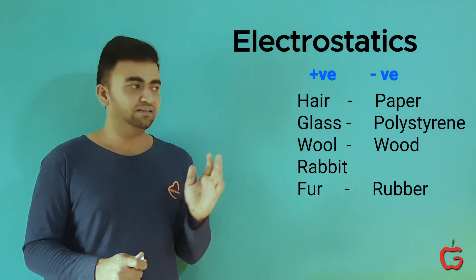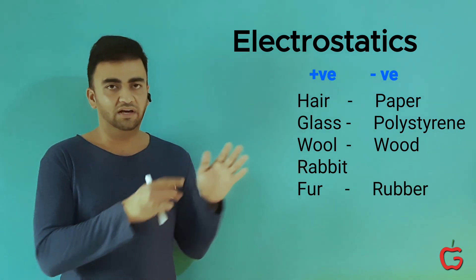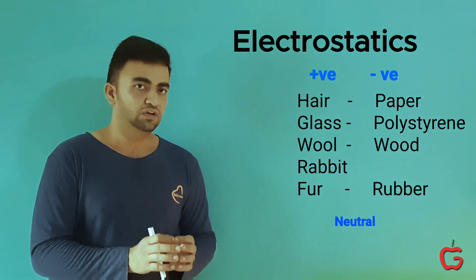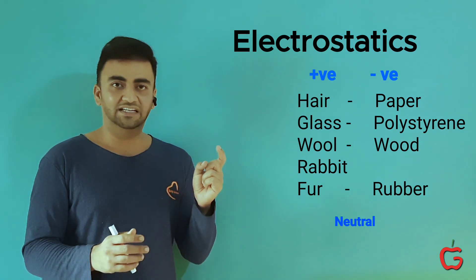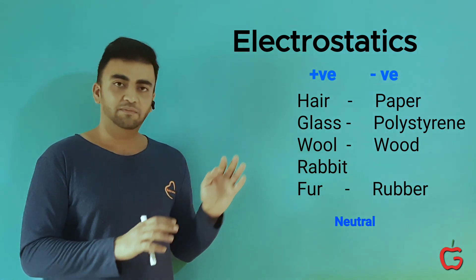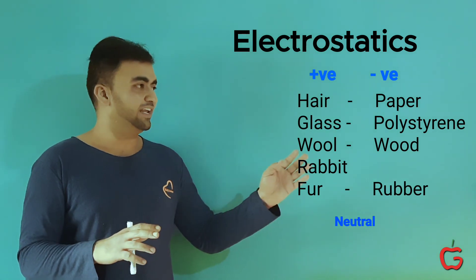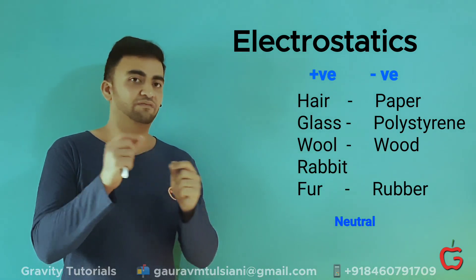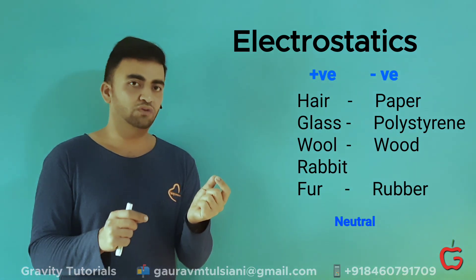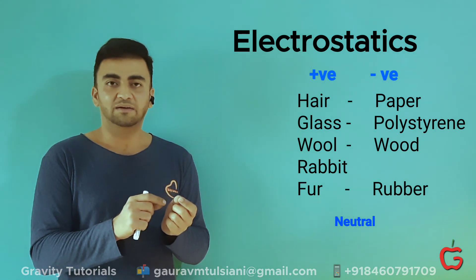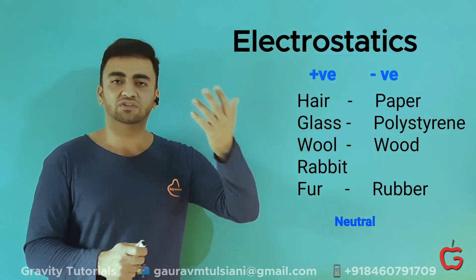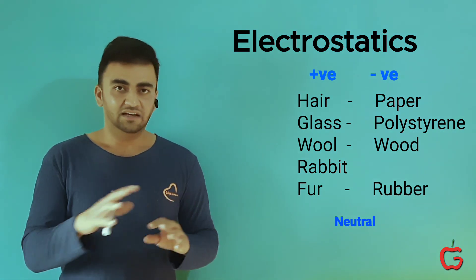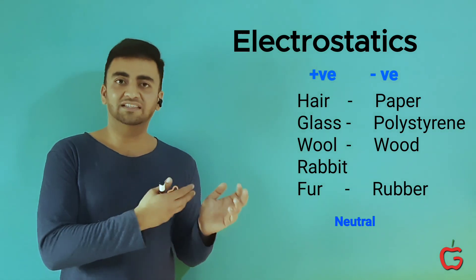Logically, they classified these materials into two columns and arbitrarily named column one as positive and column two as negative, the logic being that opposites attract. Prior to rubbing, objects did not attract or repel, so they were called neutral. The naming was arbitrary — they could have named the first column negative and the second positive. If that were the case today, the electron would have been called positive and the proton would have been called negative. Today we have a positive proton and a negative electron.